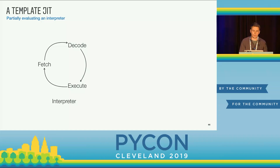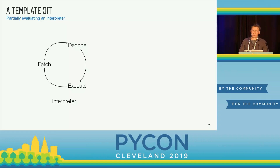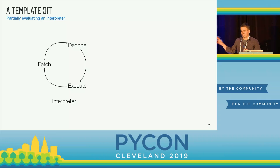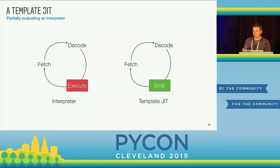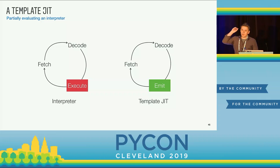This kind of begs the question: if CPython already has C code for every opcode, can we compile a function by looping over the bytecode and just emitting the equivalent native code? We basically just take the assembly code for the case statement and spit it into an executable piece of memory. The answer to that question is yes, and this is the essence of a template JIT compiler. So instead of a fetch, decode, execute cycle, we have a fetch, decode, emit cycle — we just walk through the bytecode and emit some assembly code.